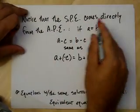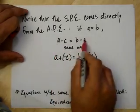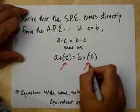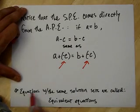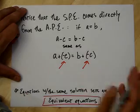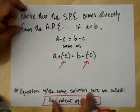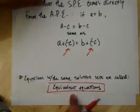Remember, the subtraction property of equality comes directly from the addition property of equality. This is the same thing as adding a negative C to both sides. So, we're both saying the same thing. Remember, equations with the same solutions are called equivalent equations. So, what happens is when we're doing this, when we do these things, add things or subtract things to both sides, we're making equivalent equations. We're not changing the equation.